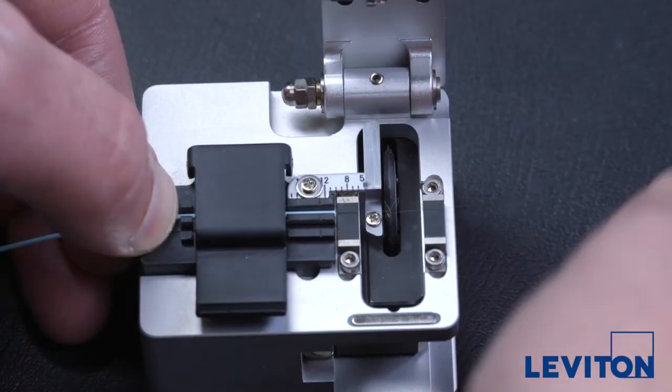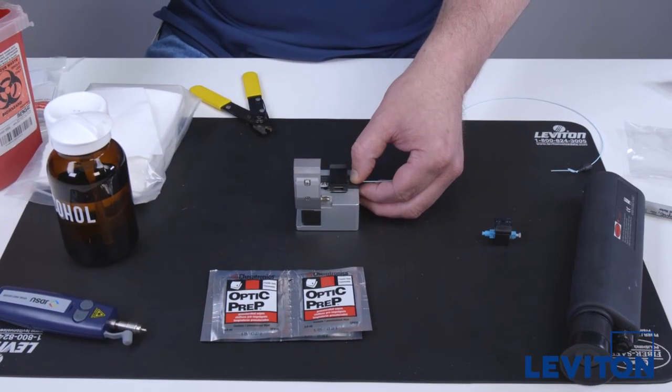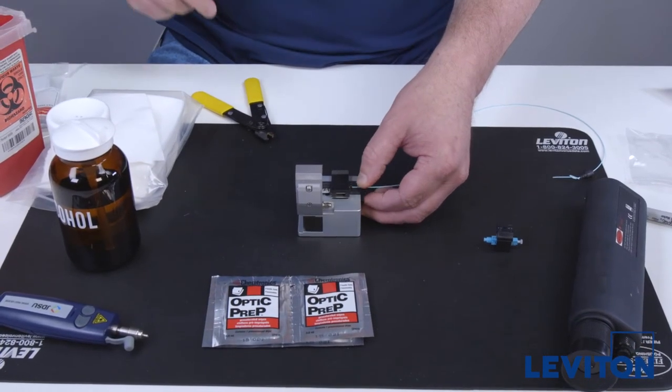Open the main fiber door and safely discard of the fiber scrap. Leave the cleaved fiber in the holder until you are ready to insert it into the connector.